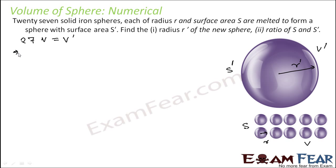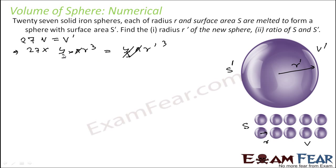The volume of the smaller sphere is 4/3 πr³. So 27 × (4/3 πr³) = 4/3 π(r′)³. The 4/3 π cancels out, giving r′ = cube root of 27r³, which is 3r. So we have the relationship: r′ = 3r.